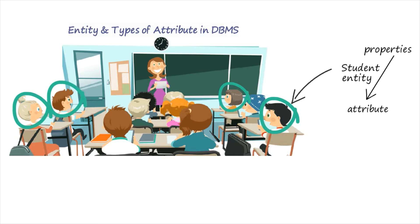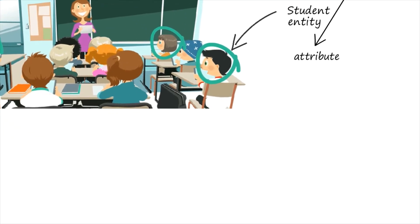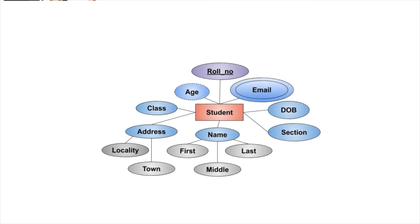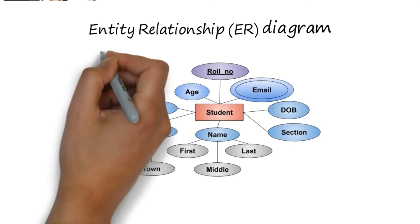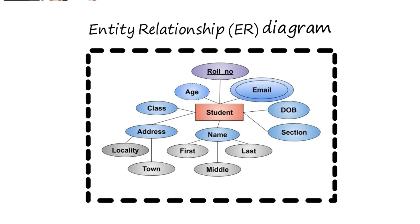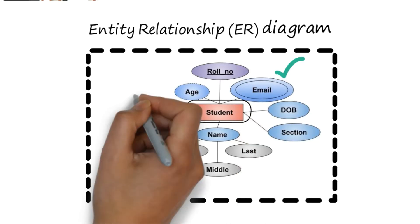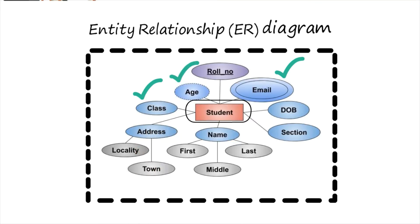In Database Management System, to represent a particular entity and its related properties, we use a specific diagram known as an ER Diagram — Entity Relationship Diagram. This diagram will represent a particular student entity with all of its properties. If you carefully observe this diagram, you can find many different kinds of notations: some properties are written in double oval, some in single oval, and some in dashed oval.